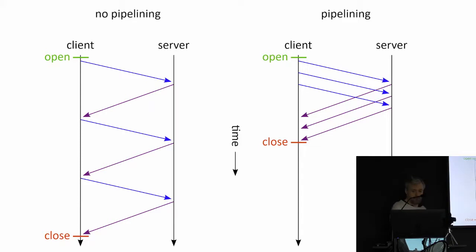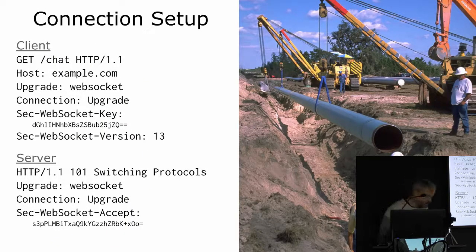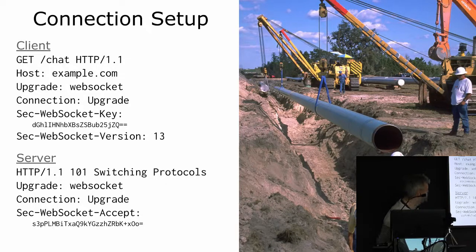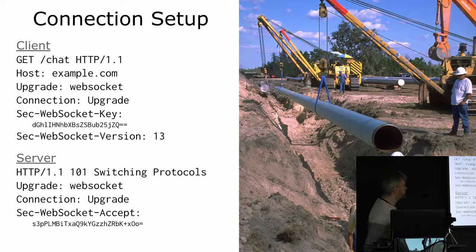This brings us up to 1.1, which is the one most people are familiar with. Before going into what HTTP/2 provides, I'll just mention one small additional 1.1 feature: connection setup, an extensibility mechanism that allowed the client and server to agree to switch over to a new protocol as part of the request-response process. This was used, for instance, to allow WebSockets to be implemented.